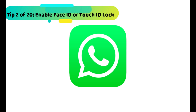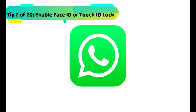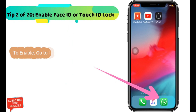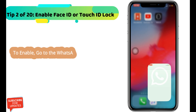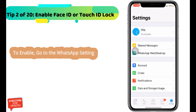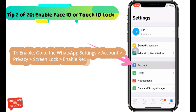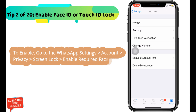Enable Face ID or Touch ID. We can secure our WhatsApp conversation with Face ID lock. To enable, go to WhatsApp settings, then account, privacy, screen lock, and enable required Face ID.